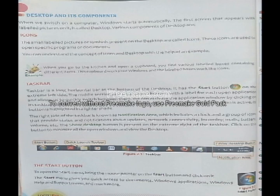When you switch on the computer, a screen appears known as the desktop screen. When the desktop screen gets ready, at the bottom you get a taskbar. In the middle of the desktop, you get different things like icons, background pictures, system icons, and more.